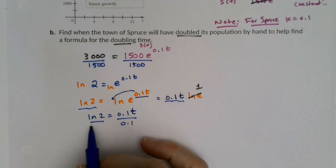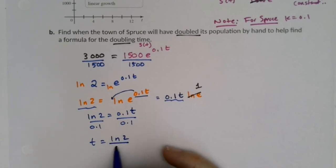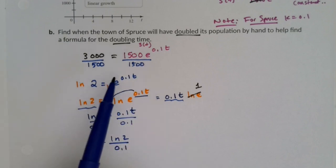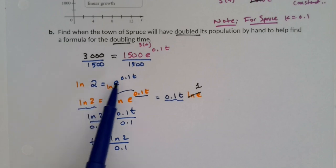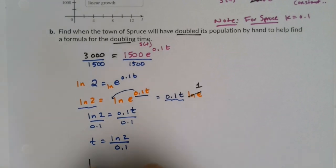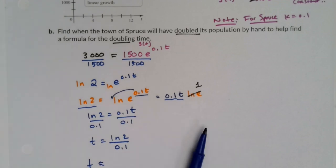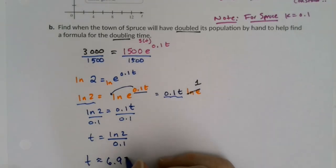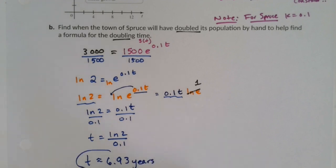Divide by 0.1 and we have T equals ln(2) over 0.1. Doubling time will always involve ln(2) — if you set it equal to double the initial value and cancel, it'll work. Similarly, for half-life with exponential decay, set it equal to one-half. So T equals ln(2) divided by 0.1, which is approximately 6.93 years.